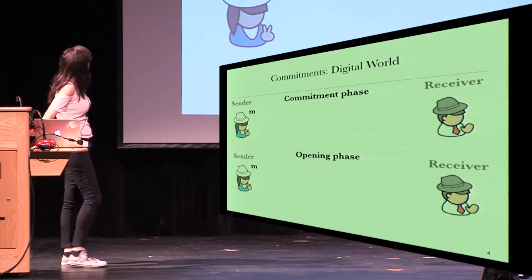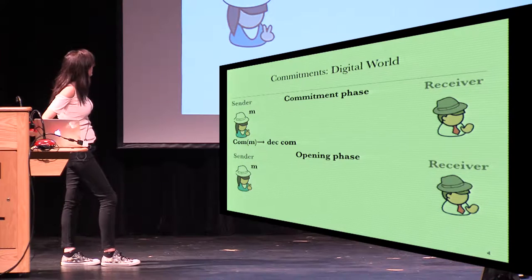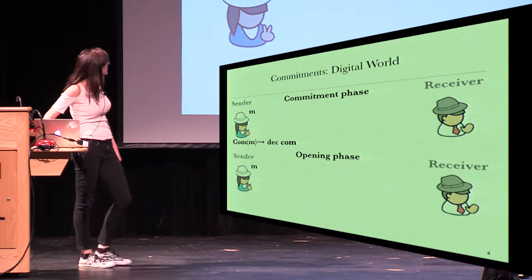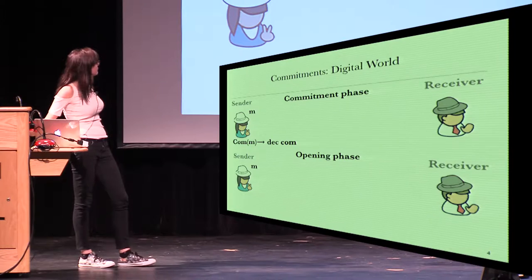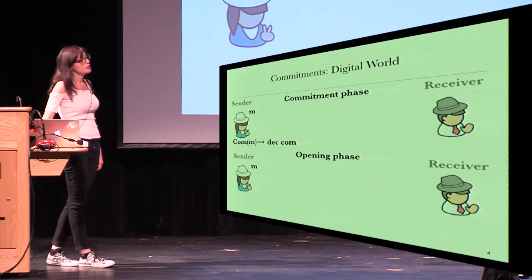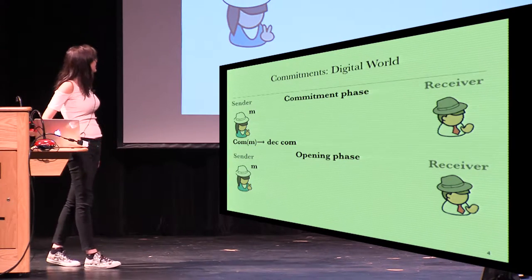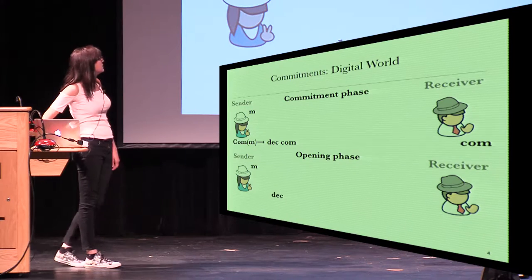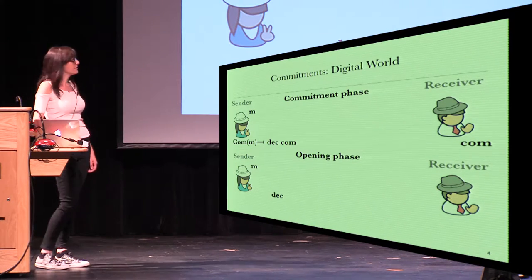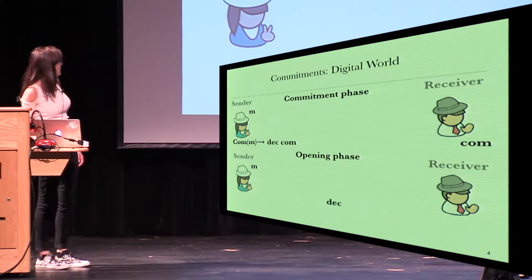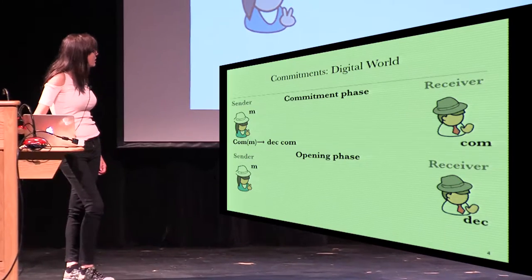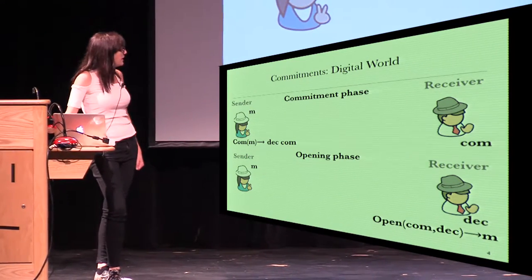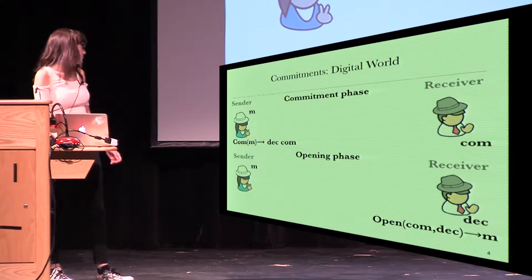In a digital world, a commitment is an algorithm that takes an input and outputs the commitment and the commitment information. The commitment is sent in the commitment phase, and the commitment information is sent in the opening phase. In this way, the receiver can run the open algorithm and gets the correct message.